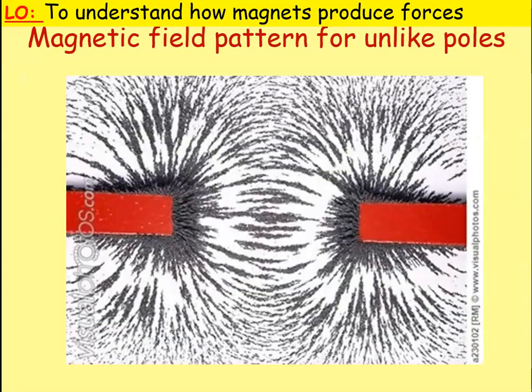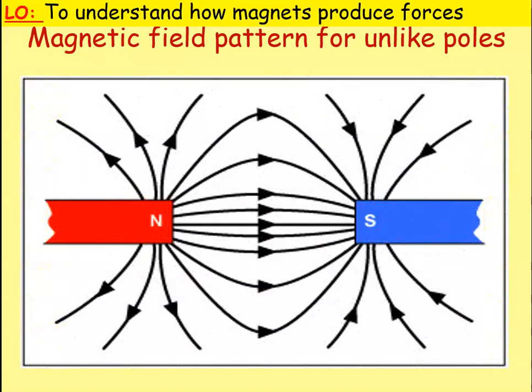What about when unlike poles are together — north and south? You can see the absolute difference from the first diagram: there's no gap in the middle. The lines are continuing through and joining up. In the field diagram, the field lines emerge from the north and connect into the south — they can join because they're going in the same direction. That's why we get attraction. Pause the video to draw that diagram in your books.